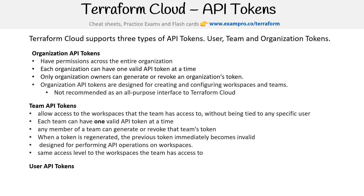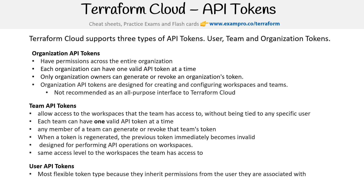We have user API tokens — the most flexible token type because they inherit permissions from the user they are associated with. They could be for a real user or a machine user. When you do Terraform login, this is what you're getting: a user API token.